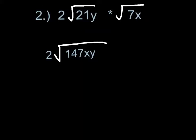Now you can multiply them together. First you multiply the outside of both numbers. 2 times the invisible 1 is 2, so 2 goes on the outside of your answer. Then 21y times 7x is 147xy.